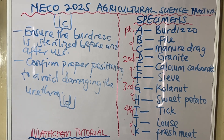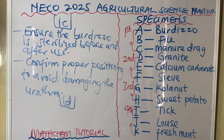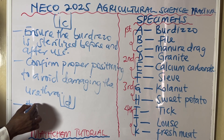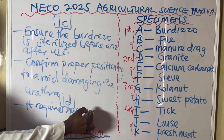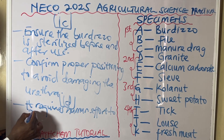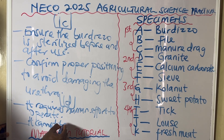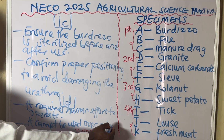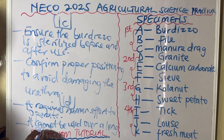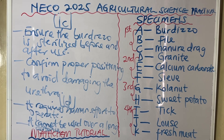They can also ask for two disadvantages of using specimen C, the manure drag. First, it requires human effort to operate — you have to hold and use the rake-like tool manually to spread manure across the field. Second, it cannot be used over a long distance easily.